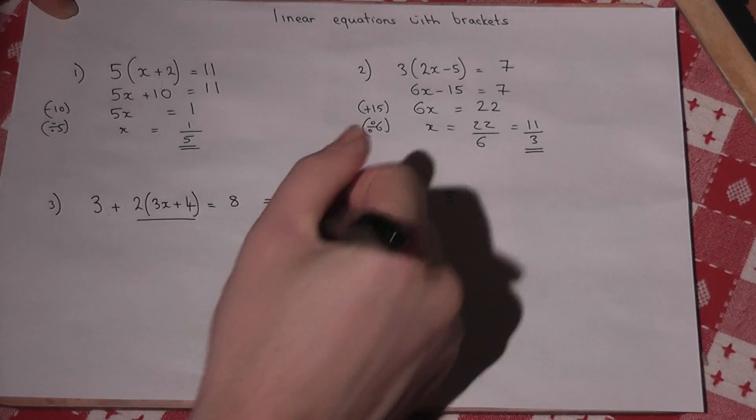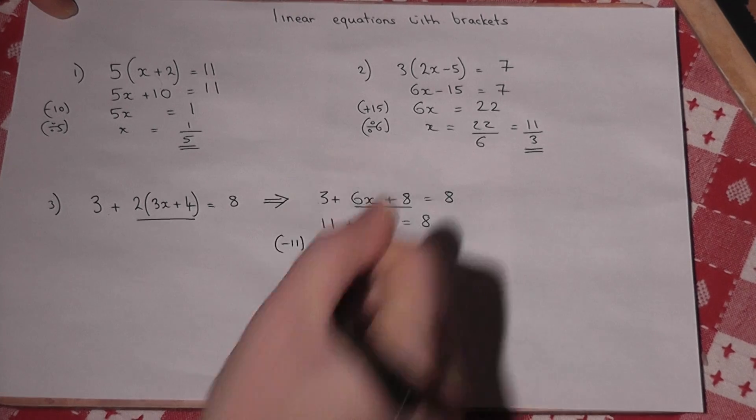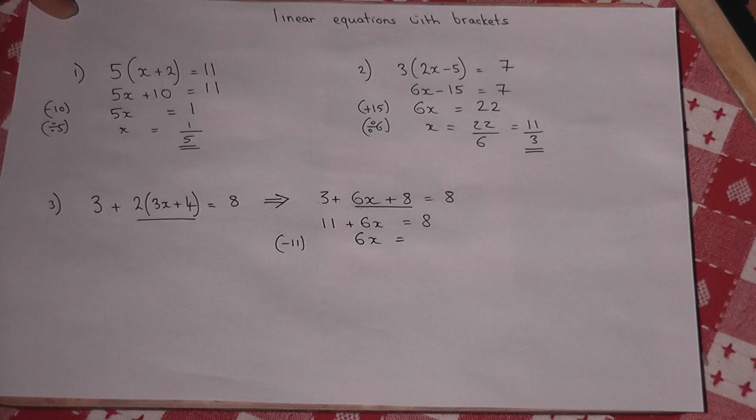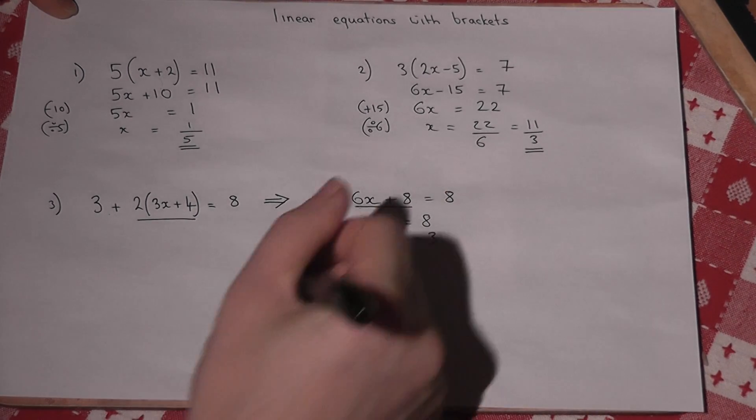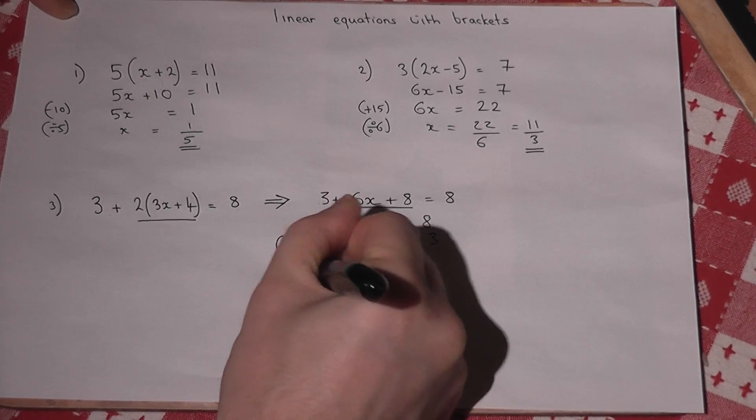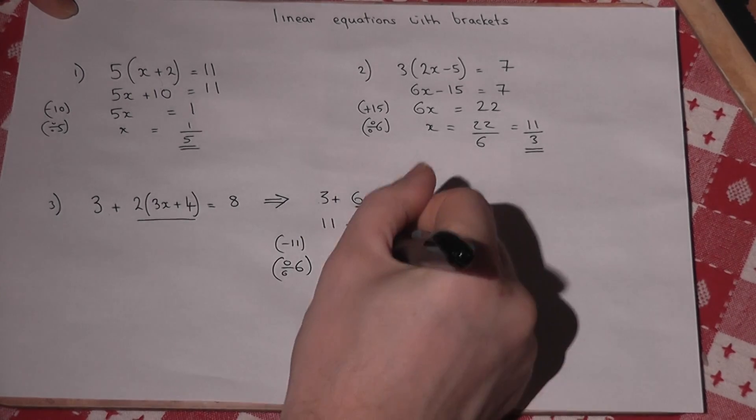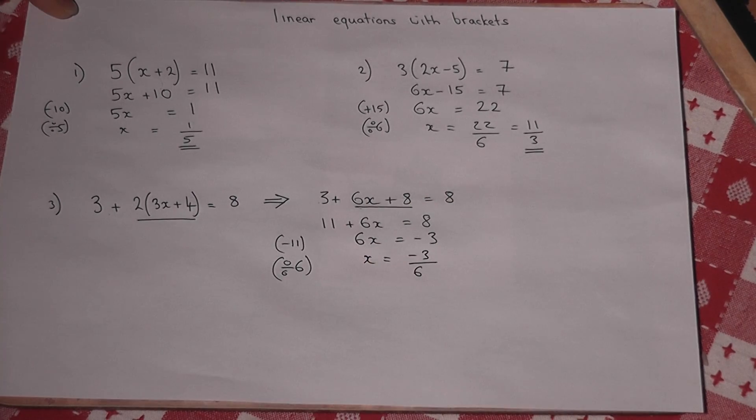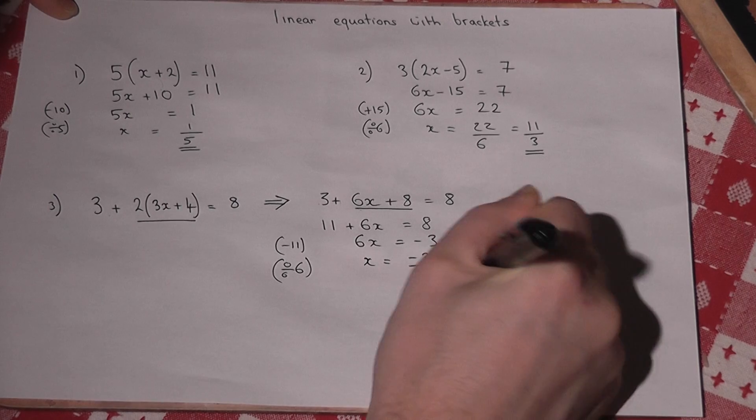There's an 11 there, so I take away 11. And I'm left with 6x equals 8 take away 11, which is minus 3. Then I need x equals, so I divide by 6. So x equals minus 3 over 6, which is the same as minus 1 half.